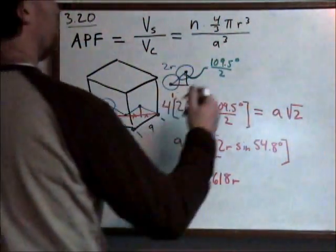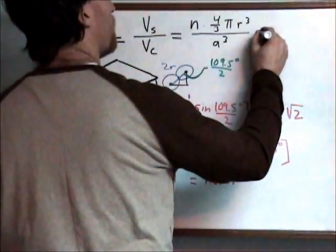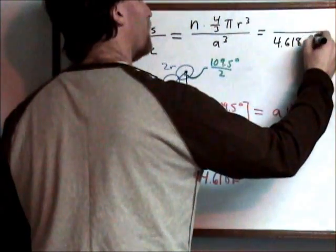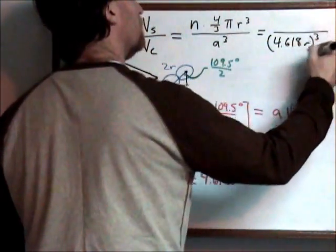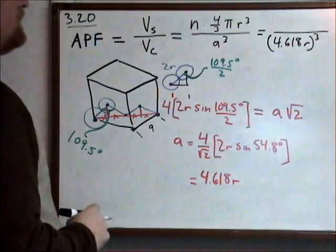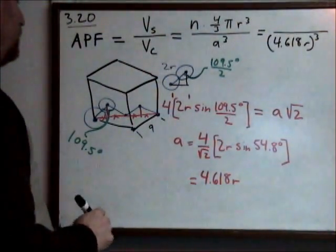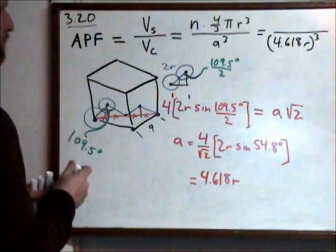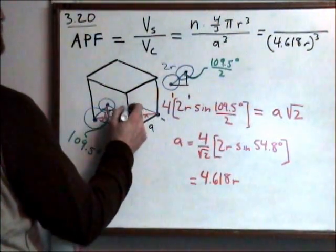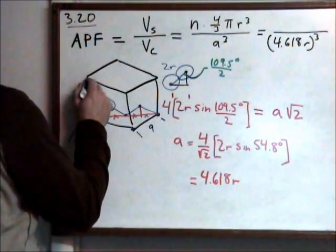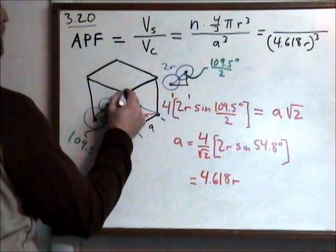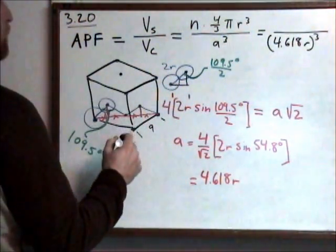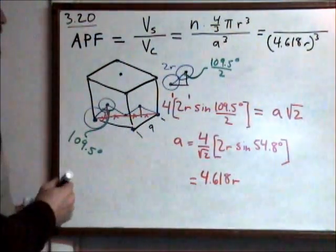Once I cube it, I can write 4.618R cubed. But we still have yet to identify the number of atoms within this unit cell. Here we have one on each face, one on each corner, and four in the middle.